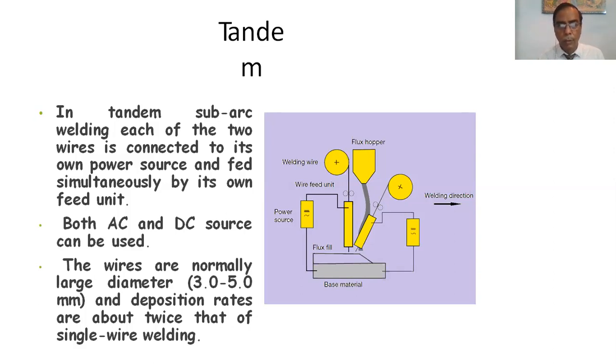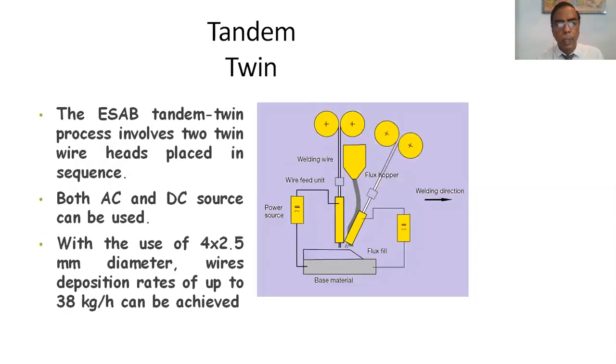Tandem twin. This tandem twin process involves two twin wire heads placed in sequence. Both AC and DC sources can be used with the use of four 2.5 millimeter wires and a deposition rate of up to 38 kg per hour can be achieved. This is tandem twin process, so wire feed is from the two sides and the flux hopper wire feed unit.